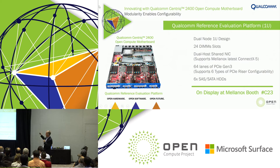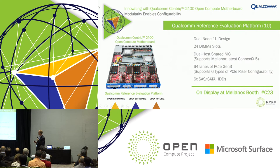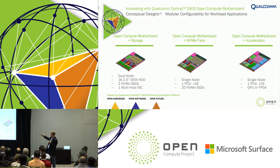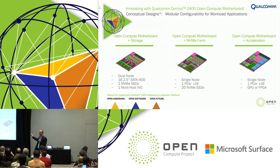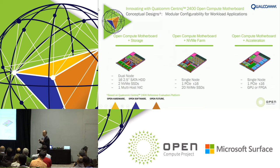Total of 24 DIMM slots in this configuration. A lot of options with this type of flexibility and modularity. These are some different concepts — for example, an NVMe farm: run this with a single node, have 20 NVMe SSDs attached to it with PCIe connectivity left over for your NIC. Potentially an acceleration card — say a Xilinx FPGA board, using a reversed riser so that the FPGA can be mounted on the other side. Or a GPU — whatever it may be. OEMs of the world can run with this and bring it to market within the context of Project Olympus or not.